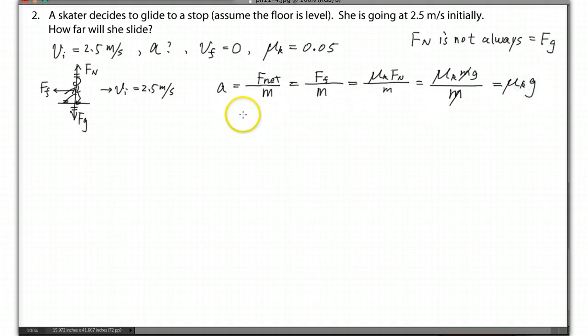Now, just be careful FN is not always equals FG. Don't take this as a formula. You have to use Newton's second law to help you to understand, in this case, FN does equal FG, but not always. So you can see you got mu K times G. And you can calculate, right? So mu K equals 0.05 times 9.8. So we don't have to calculate now. So then the question asking for how far will she slide? So the question asking for the displacement. So we can use the kinematics formula. So the formula here for final displacement, we should use the formula V final squared equals V initial squared plus 2AD.